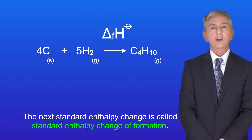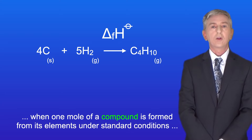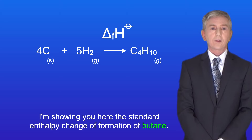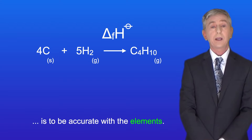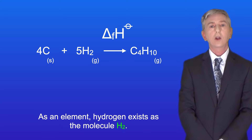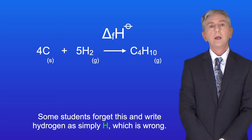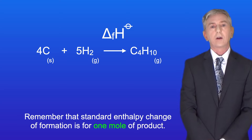The next standard enthalpy change is called standard enthalpy change of formation. This is the enthalpy change when one mole of a compound is formed from its elements under standard conditions, and all of the chemicals are in their standard states. I'm showing you here the standard enthalpy change of formation of butane. The key thing is to be accurate with the elements — we're reacting 4 moles of carbon with 5 moles of hydrogen. As an element, hydrogen exists as the molecule H₂. Some students forget this and write hydrogen as simply H, which is wrong. Always double check that the elements are accurate, and remember that standard enthalpy change of formation is for one mole of product.